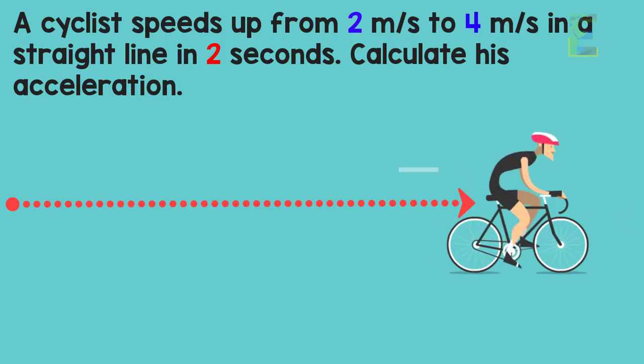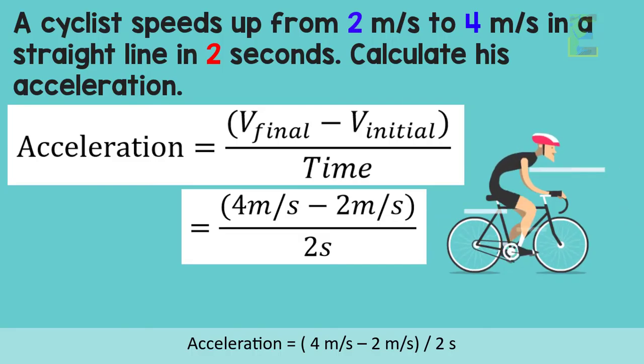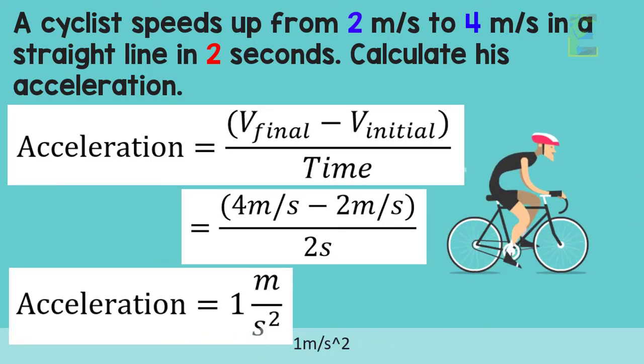So since acceleration is equal to final velocity minus initial velocity over time, acceleration equals 4 meters per second minus 2 meters per second over 2 seconds, which gives us the final answer of 1 meter per second squared.